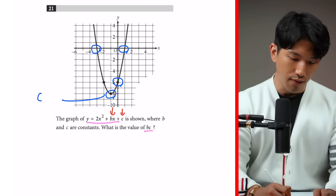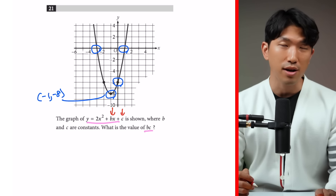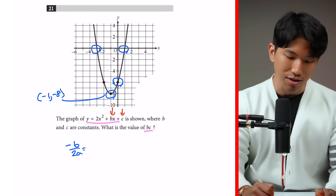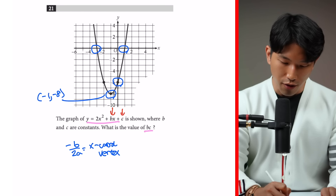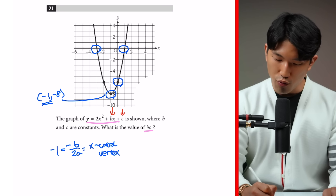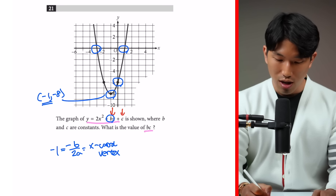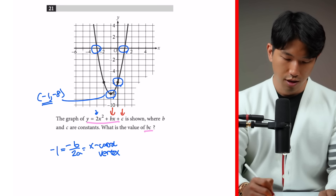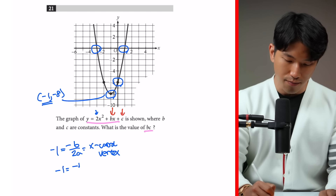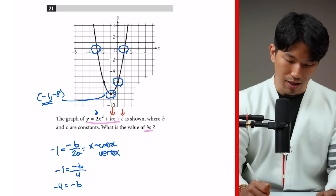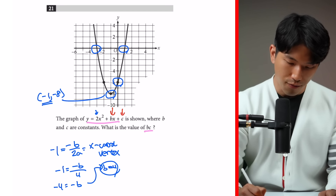The vertex has coordinates of negative 1 and negative 8. Using the vertex formula, the X coordinate of the vertex equals negative B over 2A, and we know that equals negative 1. Our A value is positive 2, so plugging in: negative 1 equals negative B over 4. That gives us negative B equals negative 4, so B equals 4.